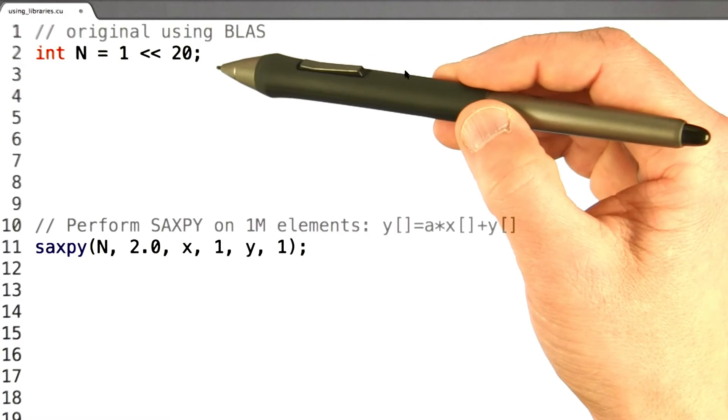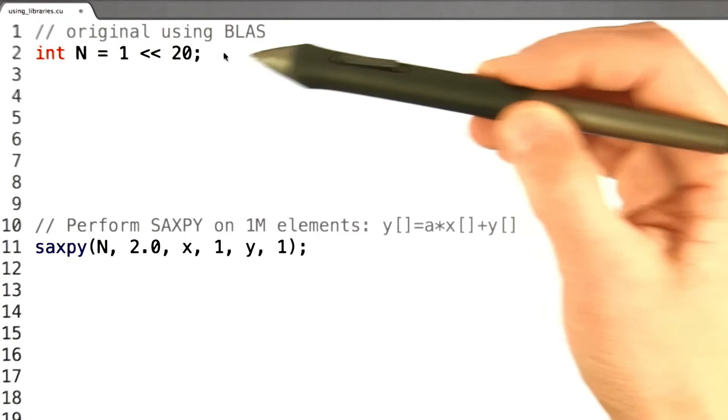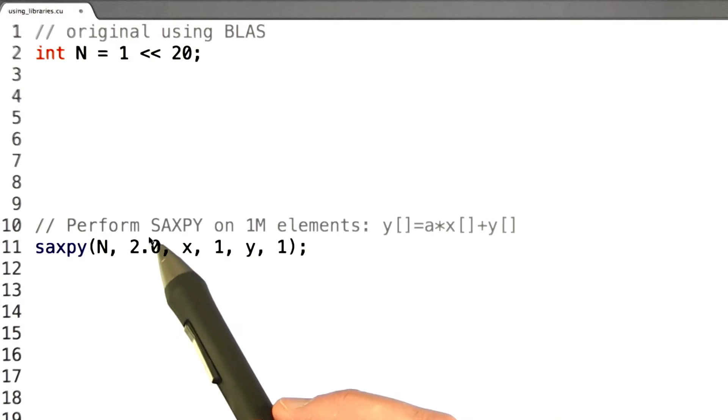Here's an example of some simple BLAS code. First, we initialize n to 2 to the 20th, or about a million, and then we perform SAXPY. Remember, SAXPY is single precision, and that stands for ax plus y.